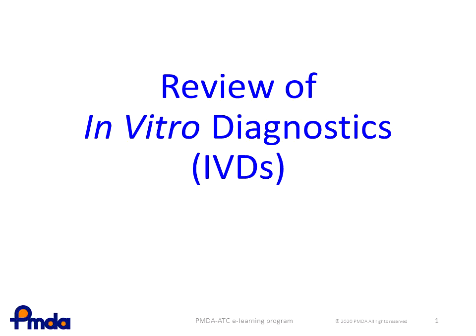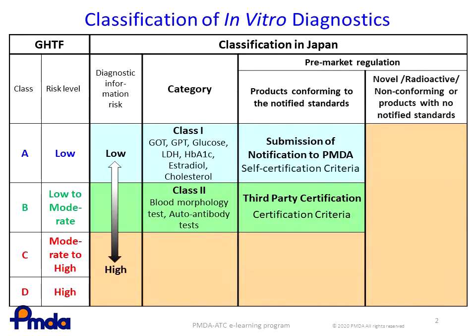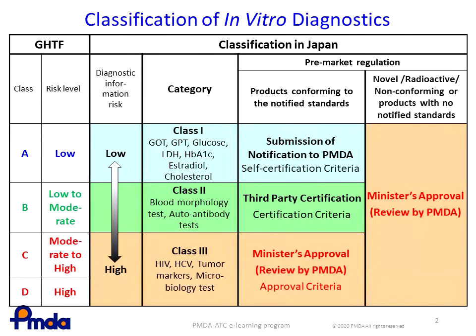This lesson provides a review of IVDs. Please note that IVD here means IVD reagents, as discussed in the contents of medical device and IVD regulations. IVDs are categorized into class 1 through 3, as discussed in the contents of the regulations. The PMDA reviews class 3 IVDs, such as HIV, HCV, and tumor markers, microbiology test kits, and any novel, radioactive, or non-conforming products, or those without approval criteria, in all classes.